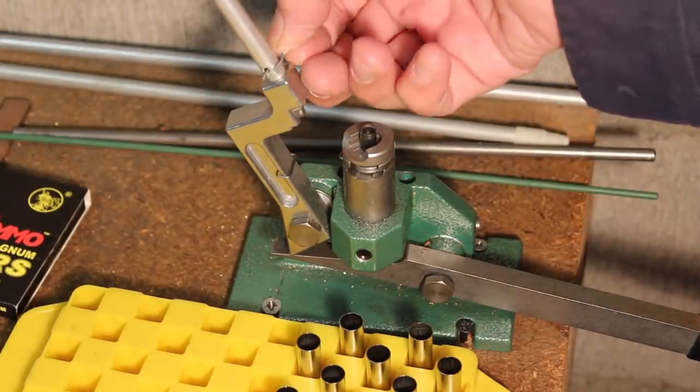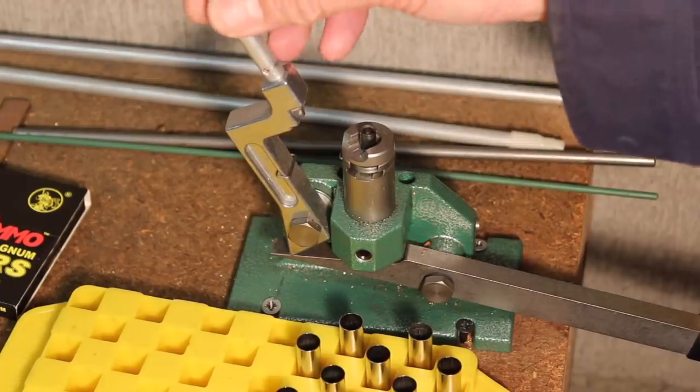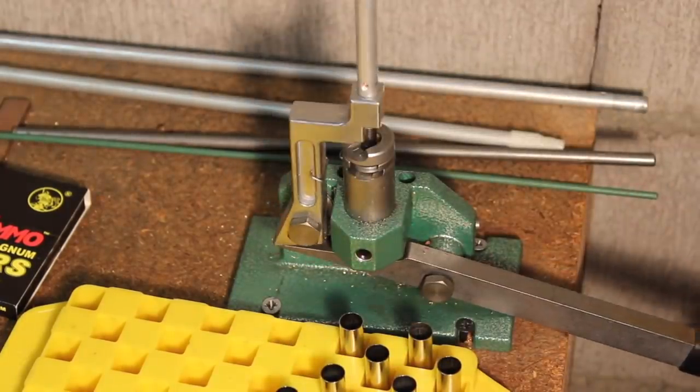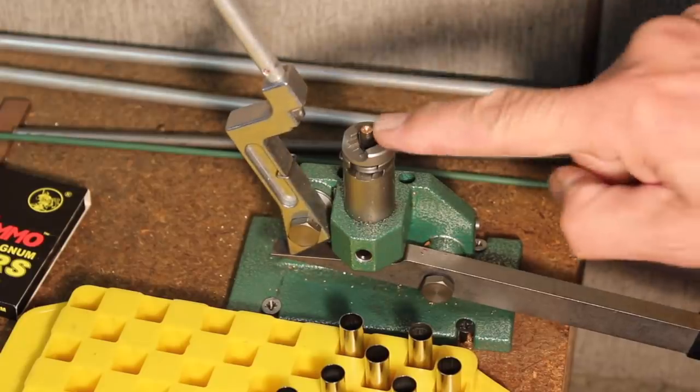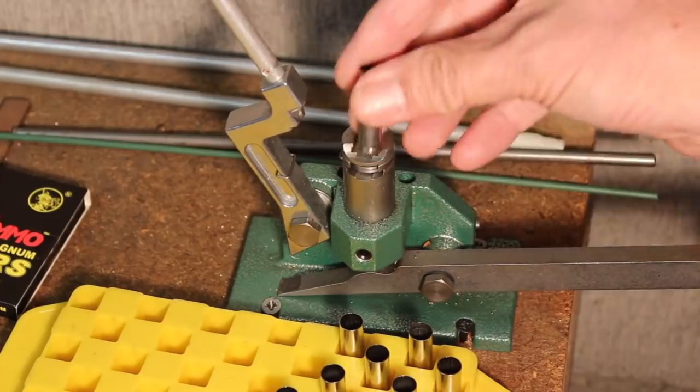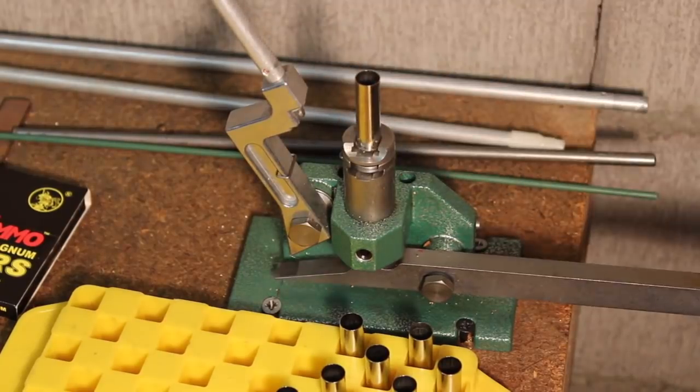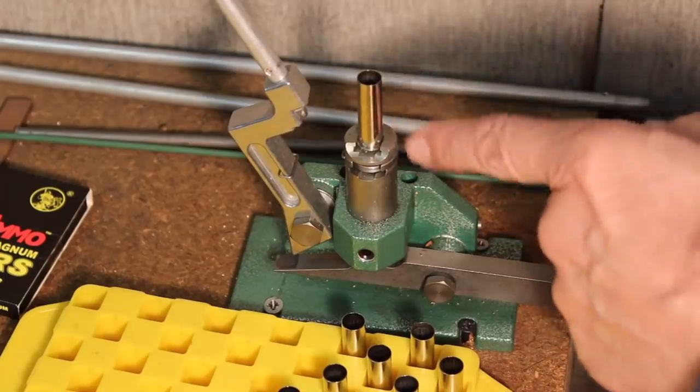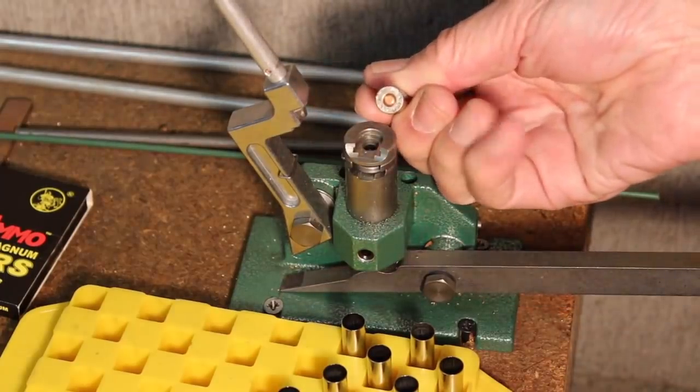We're going to use these fine small pistol magnum primers by Tula from Russia. The way this works is you pull the pin to let the primers flow down. And then you go ahead and put a primer right there on that little stem. When you put a case in there that needs one of these little primers, you can go ahead and install that primer and feel it go all the way in.